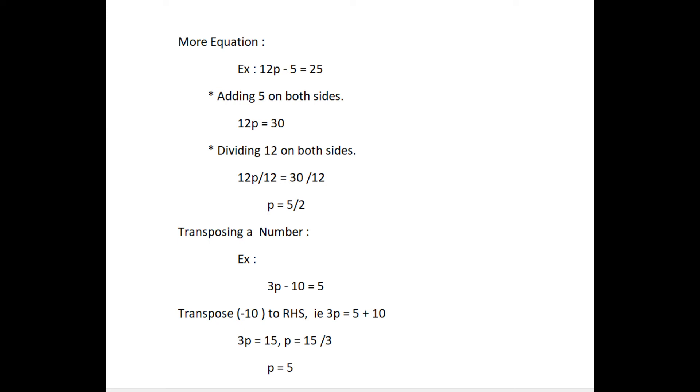From this, we can, transposing a number is the same as adding or subtracting the number from both sides. Doing this, sign of the number has to be changed. For example, 3p minus 10 equal to 5. Transpose minus 10 from LHS to RHS. Minus 10 becomes plus 10. That is, 3p equal to 5 plus 10. Then, the value of p equal to 5.